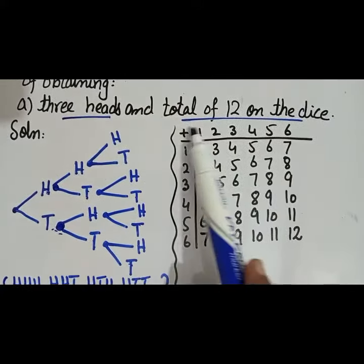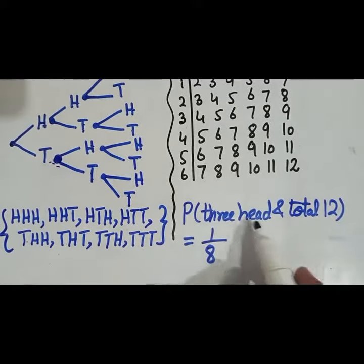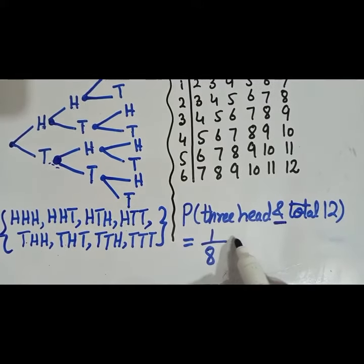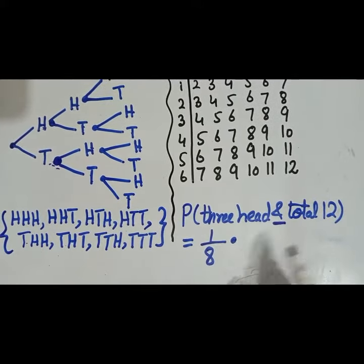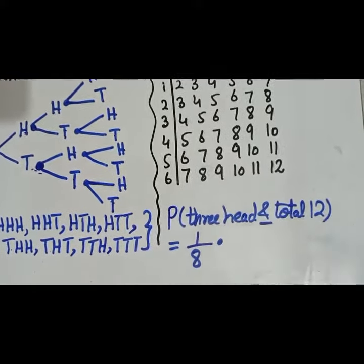So the probability will be one by eight. Eight are the total number of outcomes. The word 'and' here means we have to multiply both the probabilities. Total twelve - how many chances are there that you are getting total twelve?